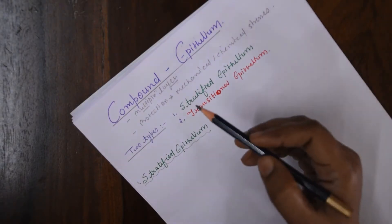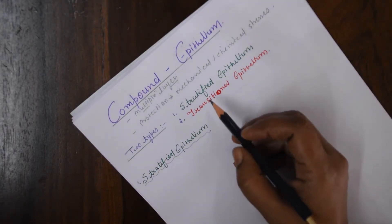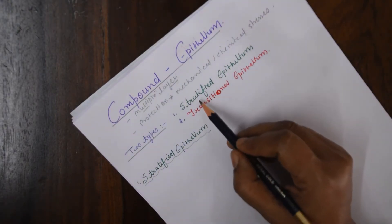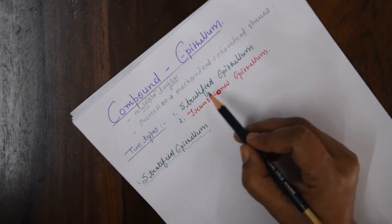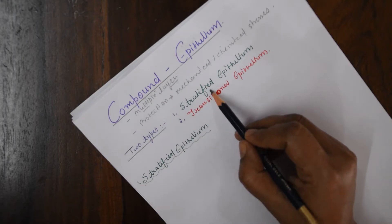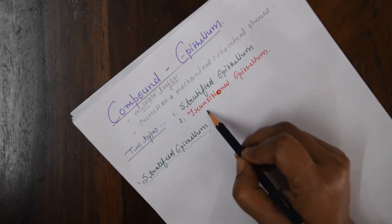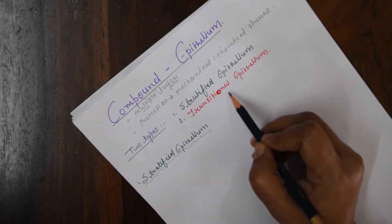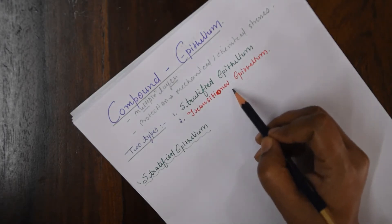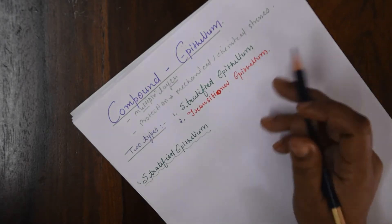Compound epithelium is of two types: the first one is stratified epithelium, and the other type is transitional epithelium.